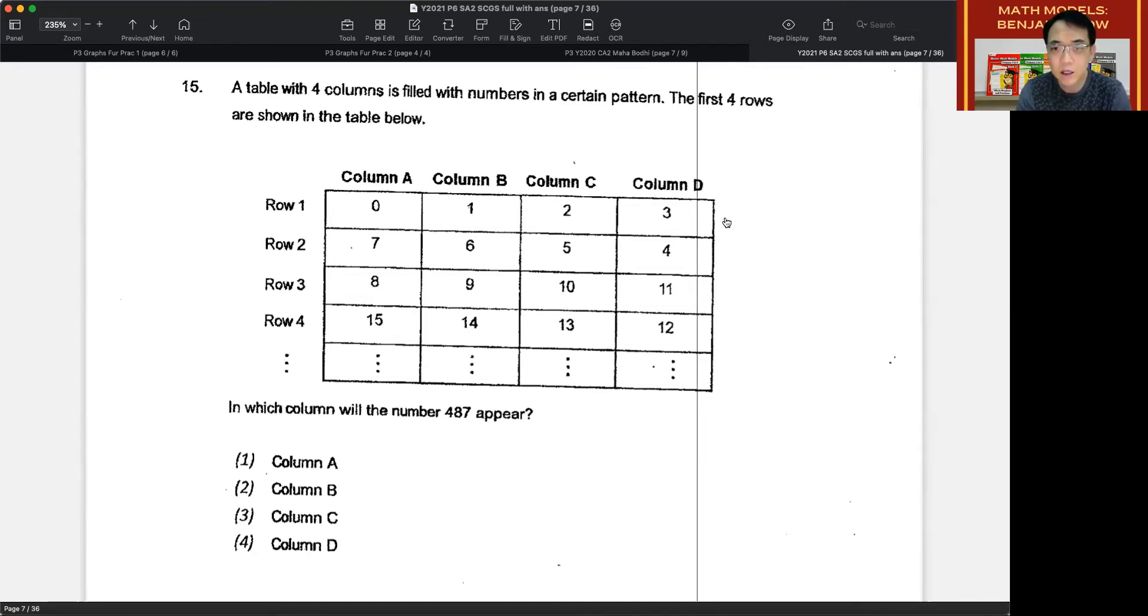It's good to be able to deal with these questions effectively and efficiently. The keywords in this question is that the table has got four columns. And that's a pattern, of course. The first four rows are shown here. There are four columns A, B, C, D, and there are four rows 1, 2, 3, 4.